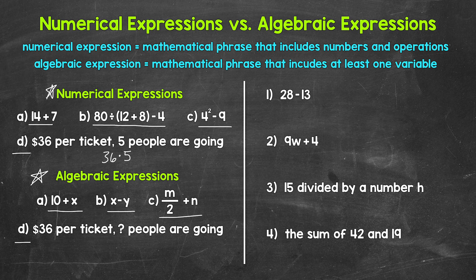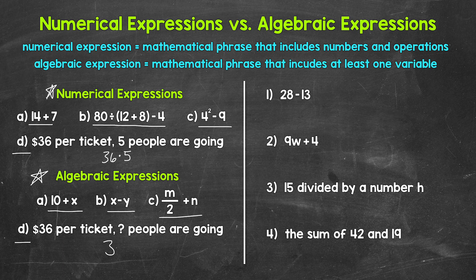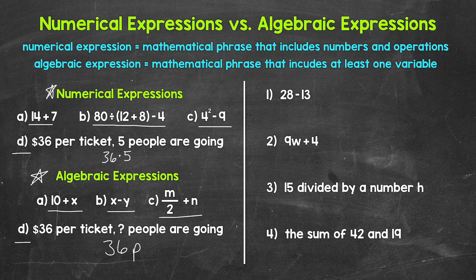And then lastly, for example D here, we have $36 per ticket. But for this situation, we do not know the number of people going yet. So who knows, there could be 2, 8, 25 people. That value is unknown. So we can use a variable to hold its place and represent that unknown value in our expression. And let's use the letter P for our variable, for people. So our algebraic expression to represent this situation, 36P, 36 times P.